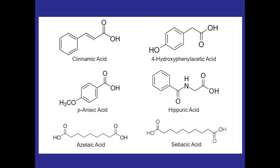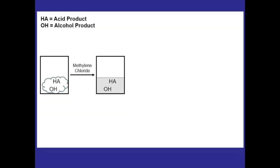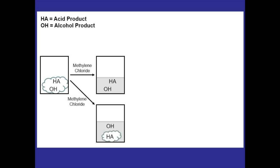The first thing we can do is dissolve the two compounds in an organic solvent — methylene chloride is a great choice, as we've used it frequently in the lab. Some acids might not be very soluble in methylene chloride because they're more polar and we'll see them persisting as a solid even after adding a good amount. If this happens, we can continue the procedure just fine, and I'll come back to this scenario in a moment.